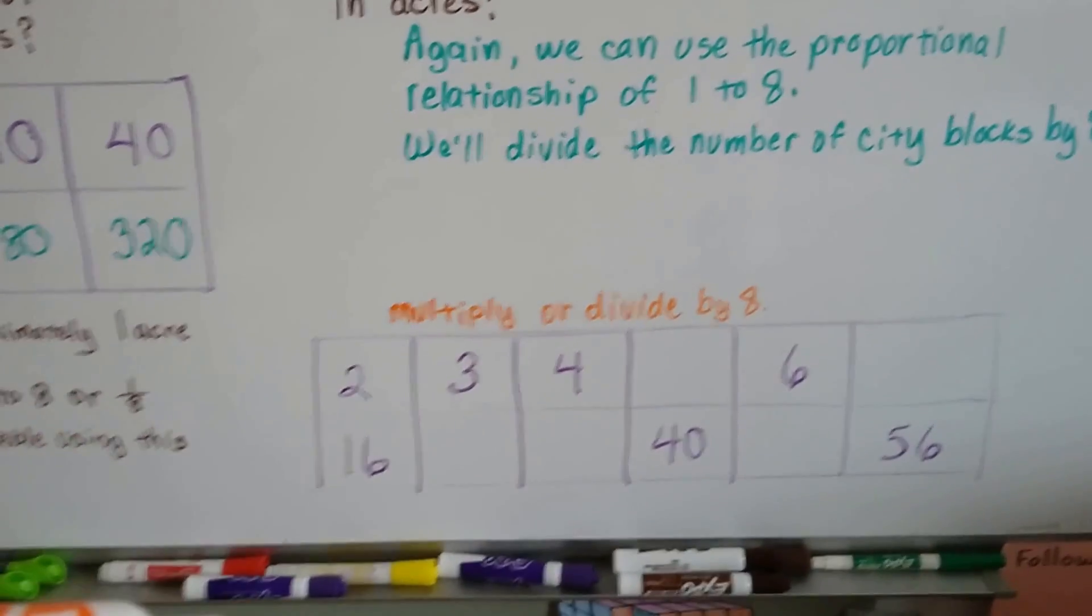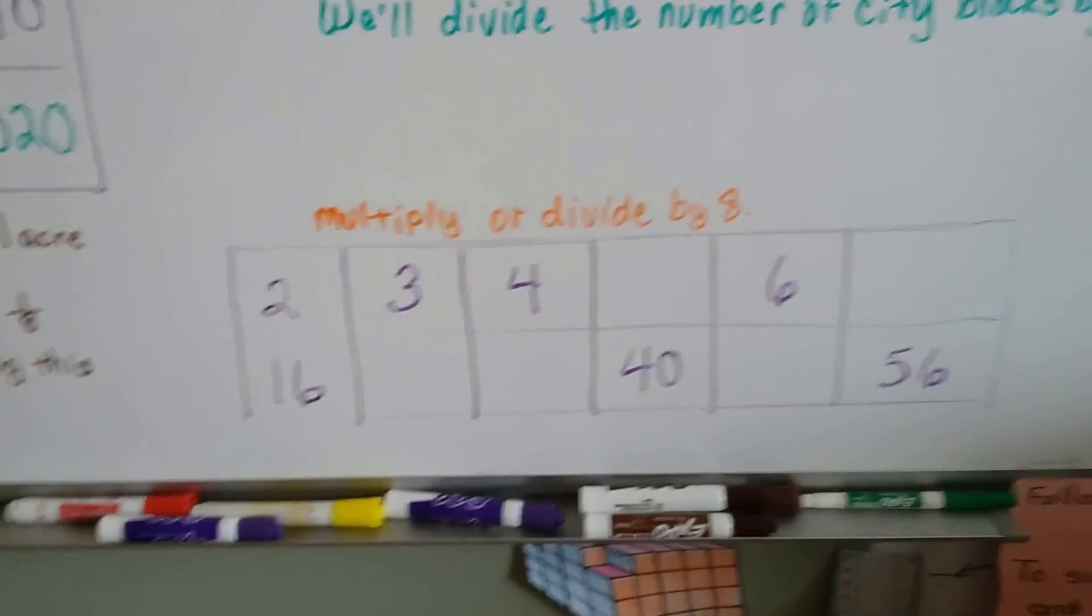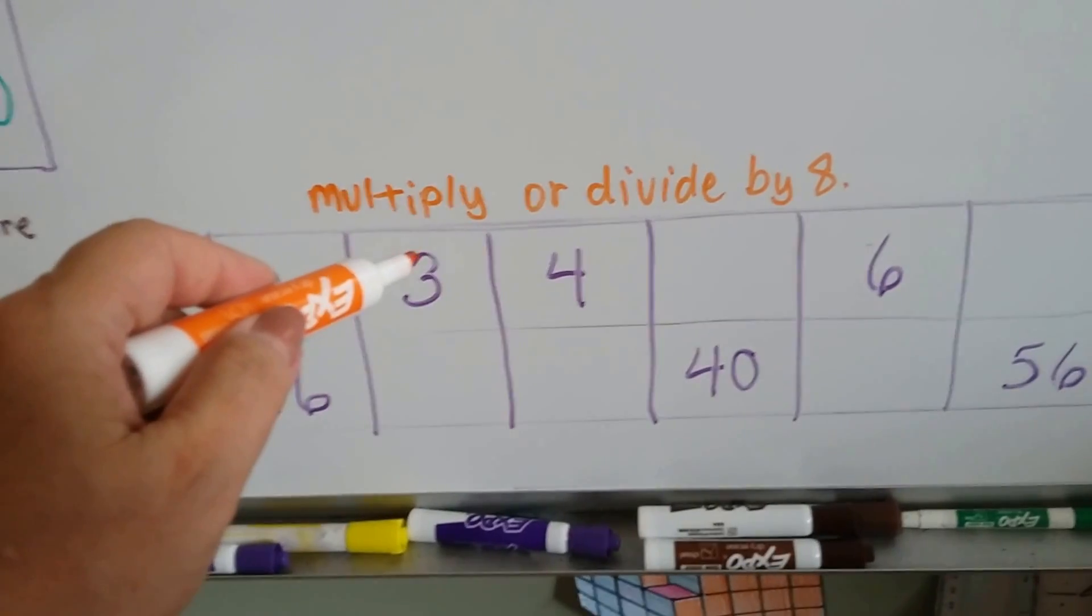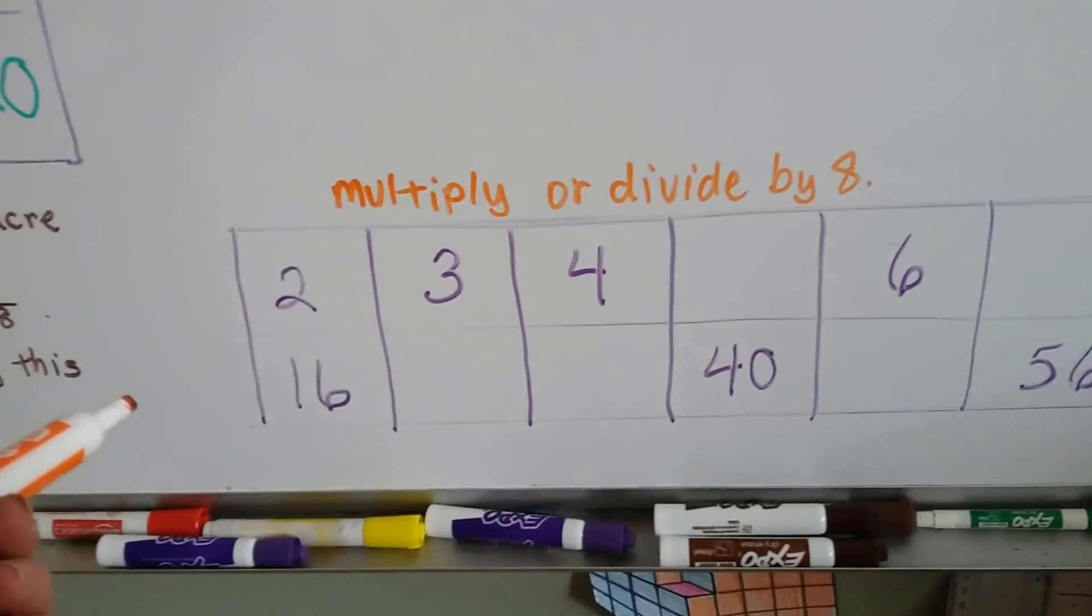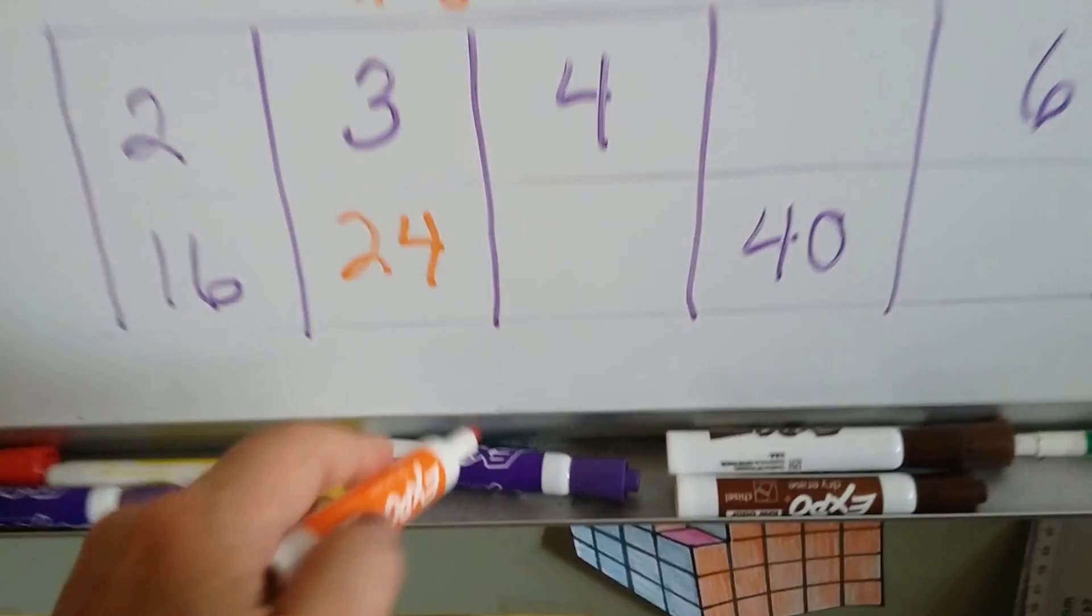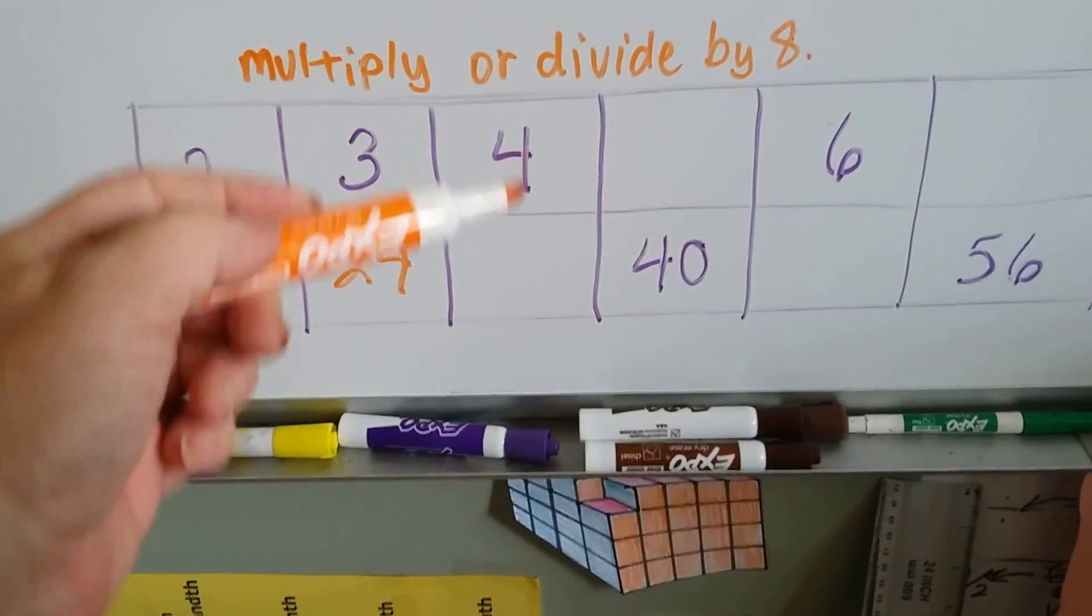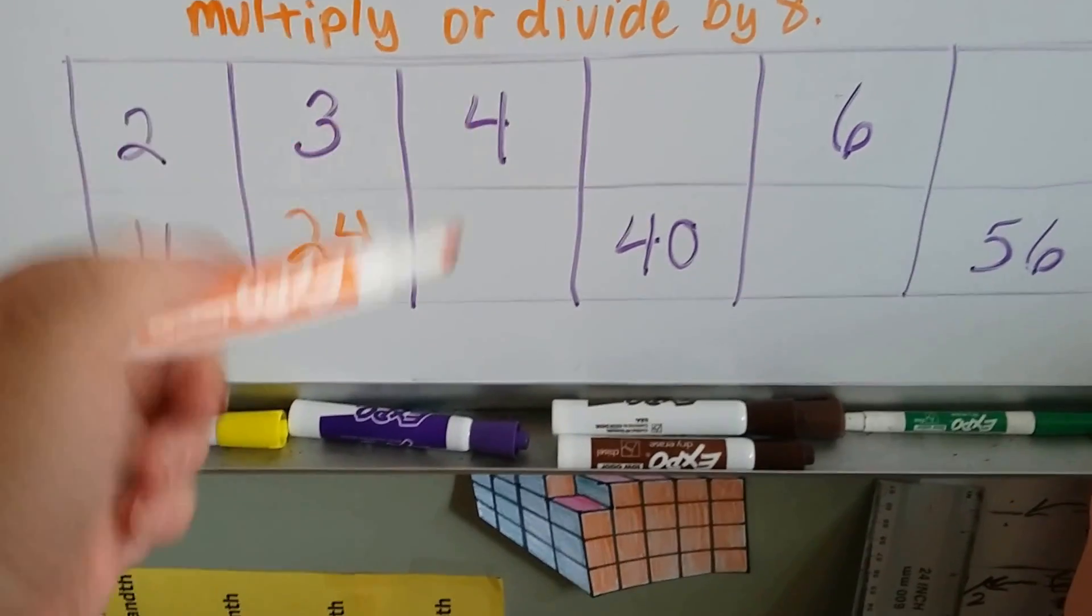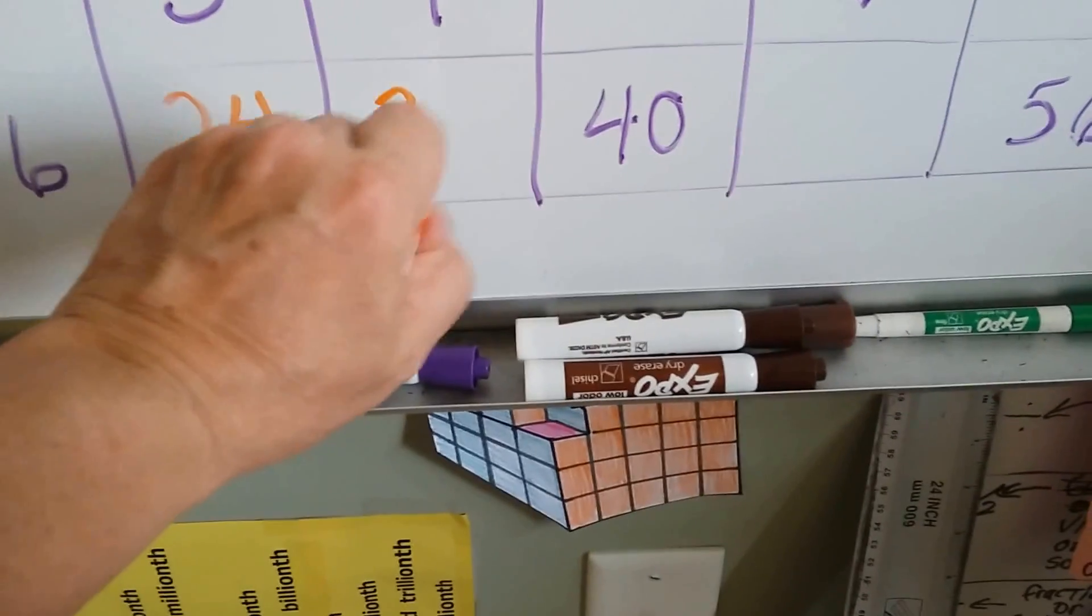So knowing that it's 1 to 8, we can actually finish this table. If 2 acres is 16 blocks, then 3 would be what? It would be 3 times 8. It would be 24 city blocks. And if 4 acres needs to be multiplied by 8, we'd be able to tell how many city blocks it is. 4 times 8 is 32. That'd be 32 city blocks.